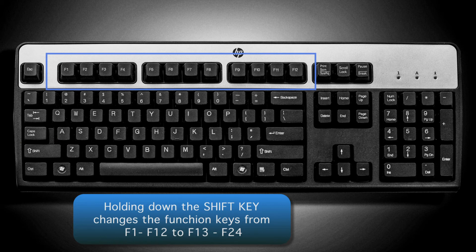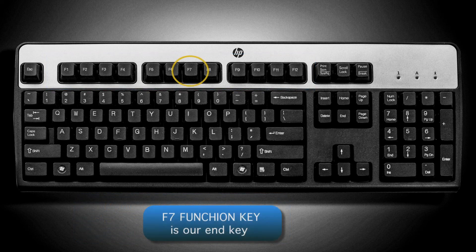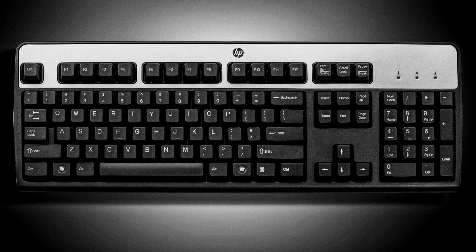These keys are very important — they allow us to move through the AS400 smoothly. F7 is important because it is our N key. These are the main things you need to know about the AS400 keyboard.